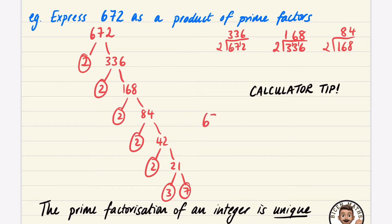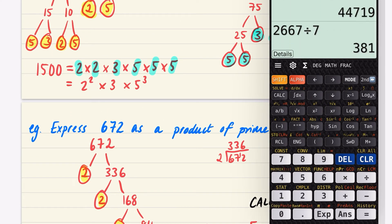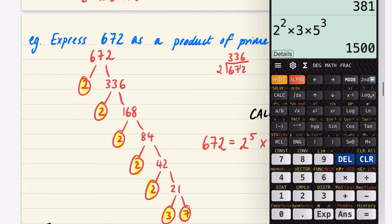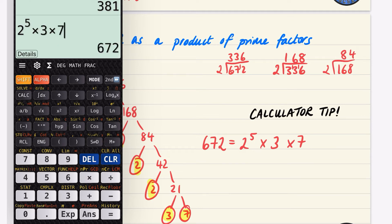So 672 has five 2s, one 3, and one 7, giving 672 = 2⁵ × 3 × 7. We can verify: 2² × 3 × 5³ = 1500 ✓, and 2⁵ × 3 × 7 = 672 ✓.